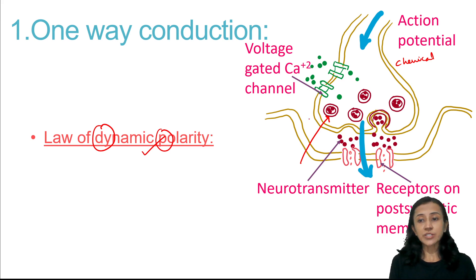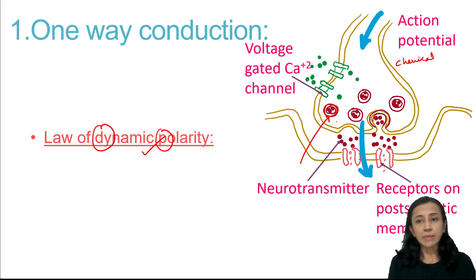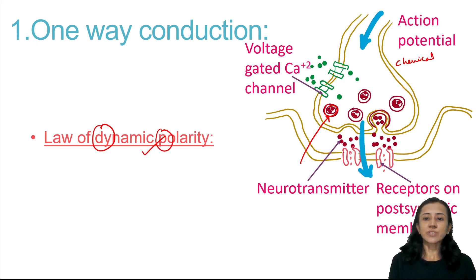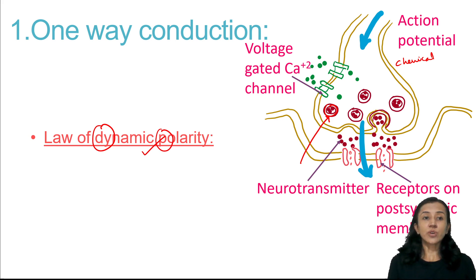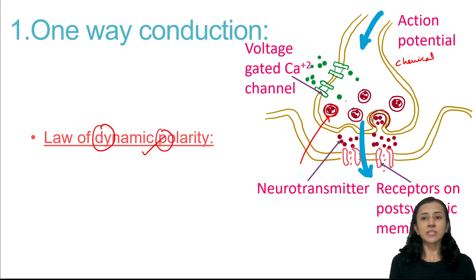The cause of one way conduction is that neurotransmitter is present in the synaptic vesicles on the presynaptic membrane, and receptors are present on the postsynaptic membrane. The importance of one way conduction is that synapse acts as a gateway and determines the direction of impulse transmission — impulse will be transmitted in one direction only.